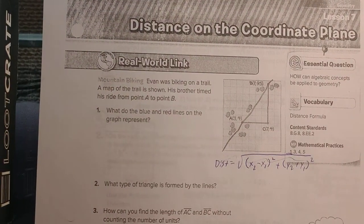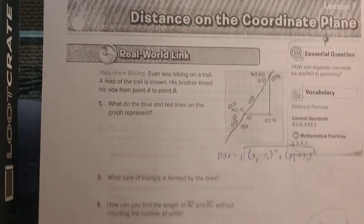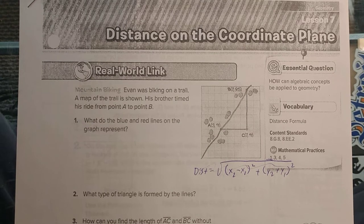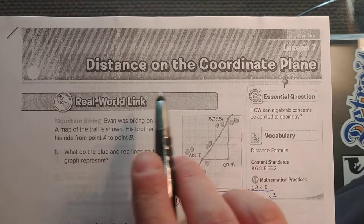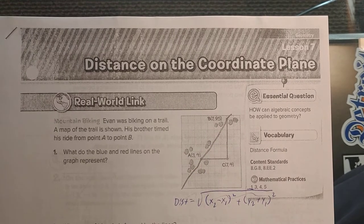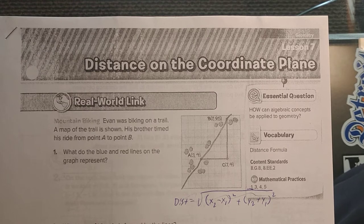Hello class. Welcome to the recording for Monday, May 4th. We're going to pick up today on the distance on the coordinate plane — looking for the distance between two plotted points. Remember the Pythagorean Theorem: a squared plus b squared equals c squared, and that only applies to right triangles.